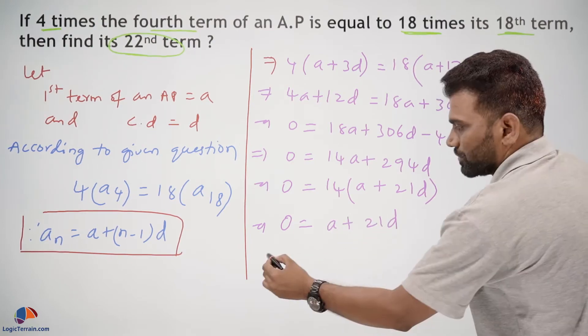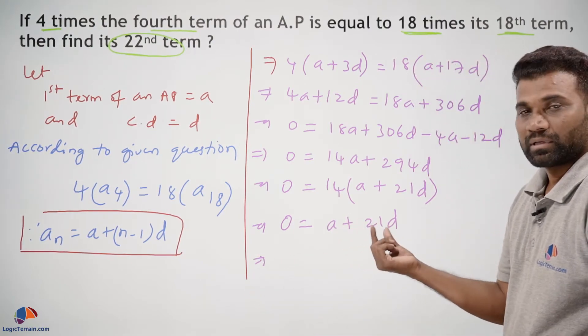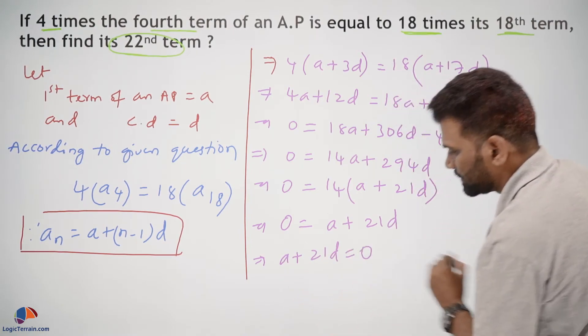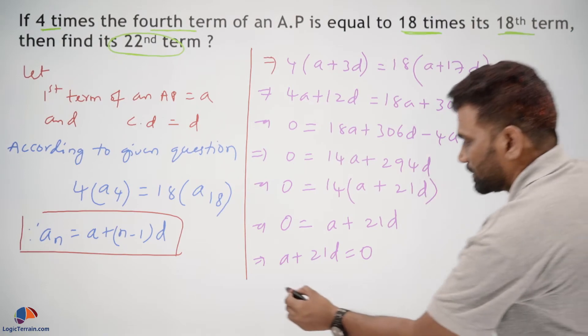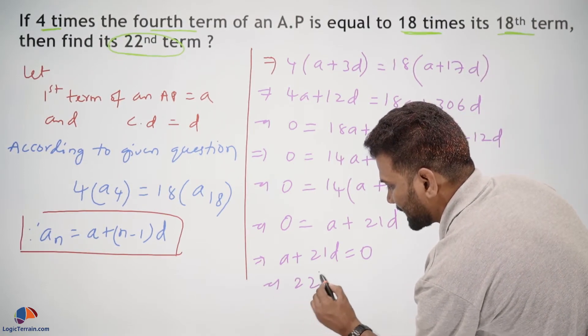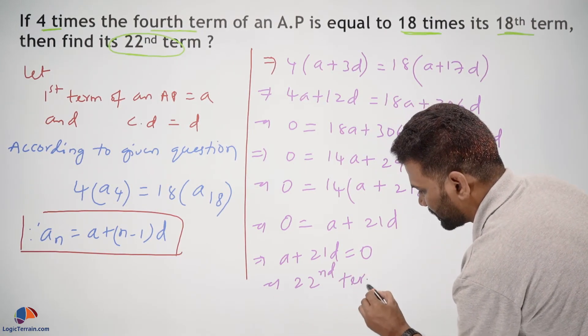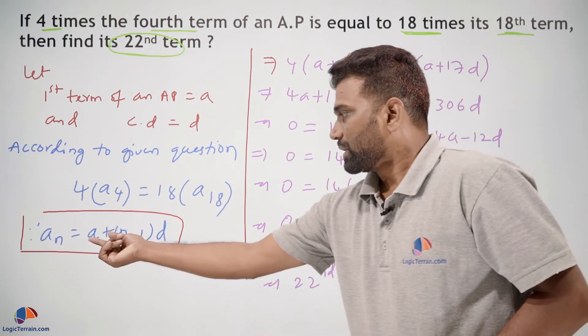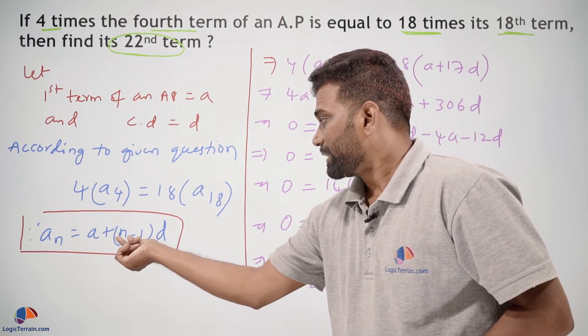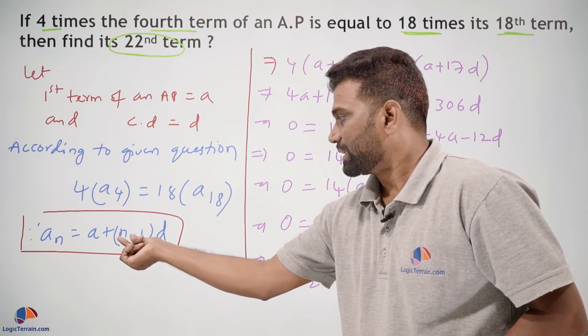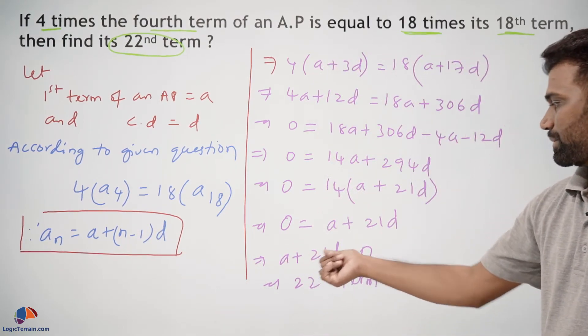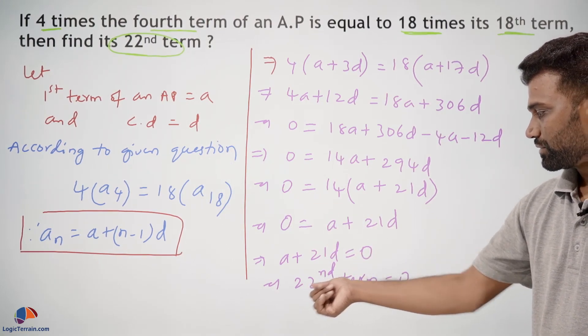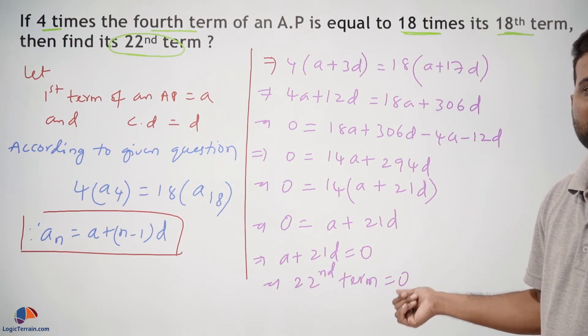Further, if you rewrite, A plus 21D equals 0, which is nothing but the 22nd term equals 0. Since the 22nd term, on substituting, is A plus (22 minus 1) into D, that is 21D. So A plus 21D, that is the 22nd term, we got 0. Therefore, the 22nd term equals 0.